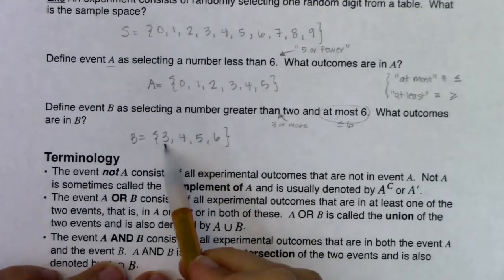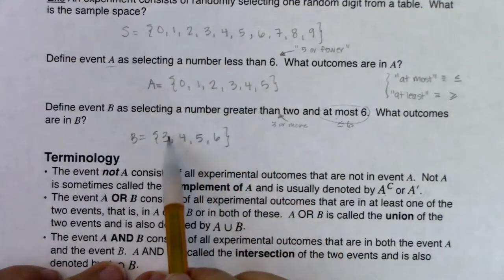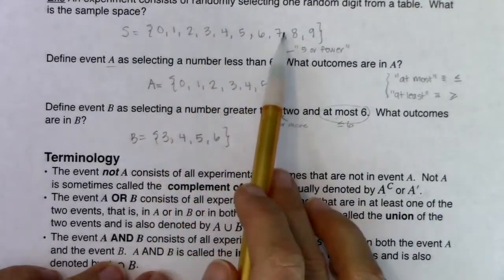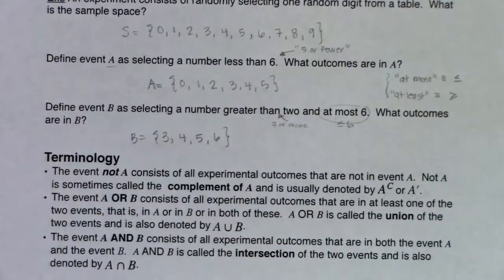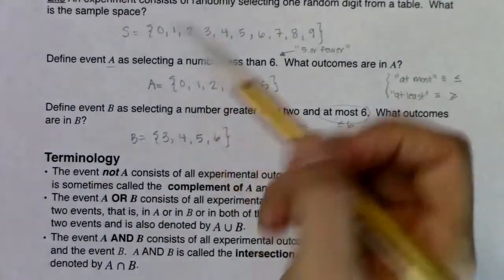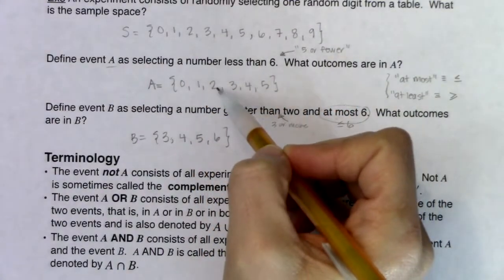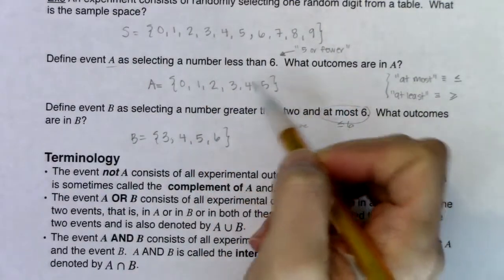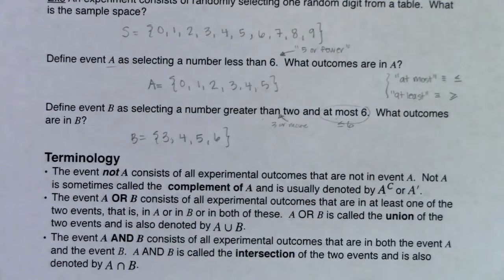Similarly, 3, 4, 5, and 6 were in B, so 0, 1, 2, 7, 8, and 9 are not in B — they are in B complement. For every outcome in your sample space, you're either in an event or you're in its complement. It's binary — you fit into one of those two.